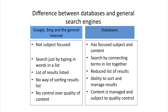In databases, you'll also be able to sort your results and manage them, so you'll get lots of additional tools to control your results and export them. However, in general internet searches, there's no way of sorting your results — usually it's by date, sometimes by relevance, but you cannot control and manipulate results.